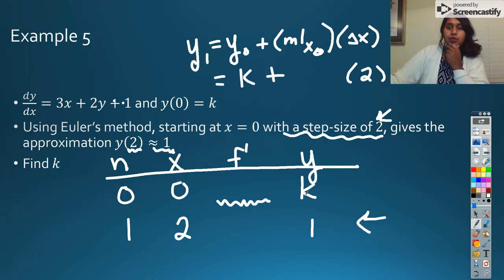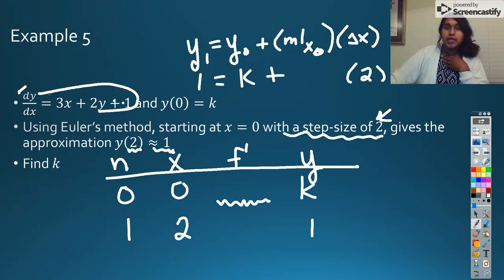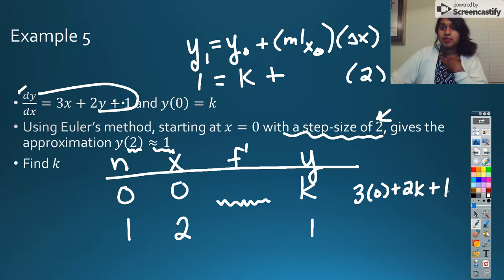So my initial y value is k. So we can go ahead and put a k right there, plus my initial slope. Well, we're not quite there yet. We need to pause for a moment and figure that one out. And then times 2. We know that. That information is given to us right here. So the only little bit that I'm missing is this part right here. We know y1 is equal to 1. So that's the part I'm missing. We're going to pull it out to the side, and we're going to talk about it for just a second. Well, what do I know that f prime is? That's this equation right here. And I plug in for my initial information. 3 times 0 plus 2 times my initial y, which is just k, plus 1. Well, that's going to cancel out, and all I'm left with is 2k plus 1.